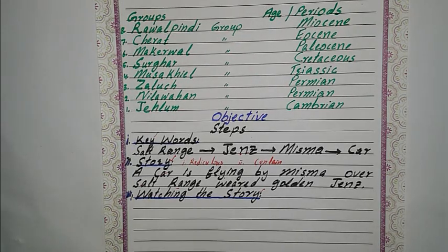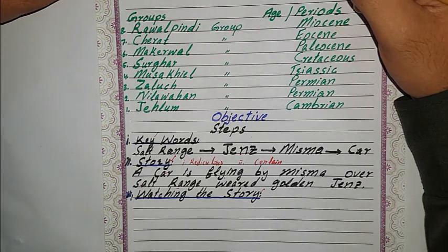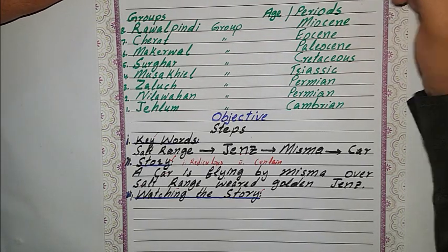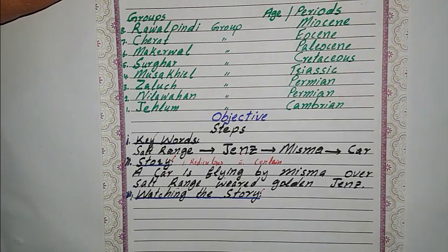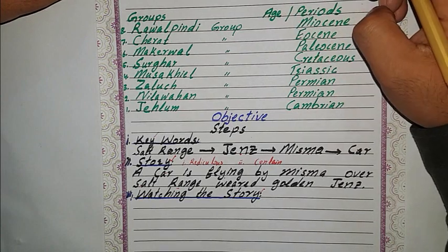My name is Jawad. This video is about stratigraphic group names of the Salt Range, based on new techniques and skills. In this video, I will show you a method for learning the stratigraphic group names of the Salt Range and their sequence according to their age and period of deposition.